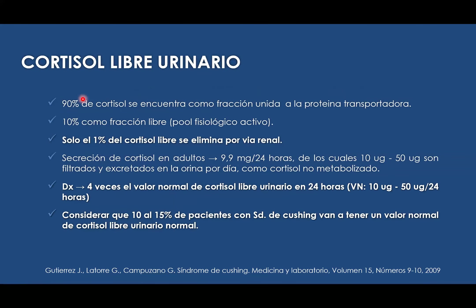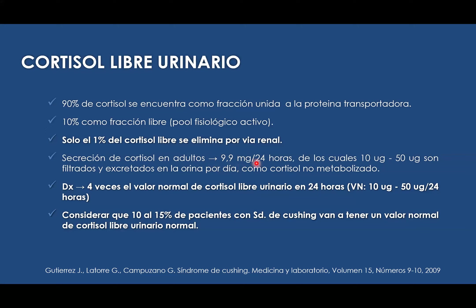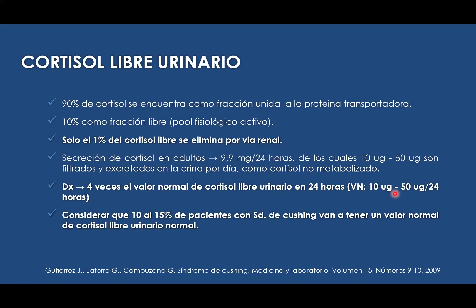El cortisol libre urinario: el 90% del cortisol se encuentra unido a la fracción proteica, por lo cual no va a ser usado. Lo que nos interesa es ese 10% que está libre, del cual solo el 1% es lo que vamos a tener por vía renal. El valor normal del cortisol libre en orina es de 9.9 microgramos en 24 horas, de los cuales 10 a 50 microgramos son excretados por la orina por día como cortisol no metabolizado. Al momento de dosar el cortisol libre, tenemos que tener un valor por encima de 50 microgramos en 24 horas; es decir, hablamos de más de 200 microgramos aproximadamente.